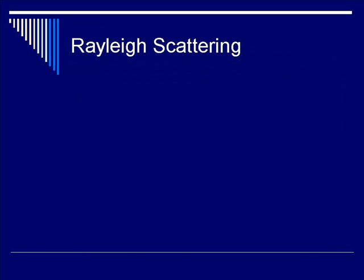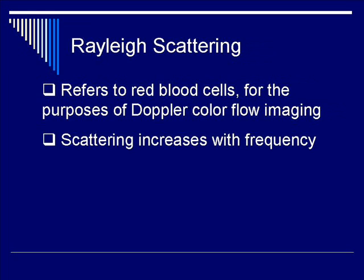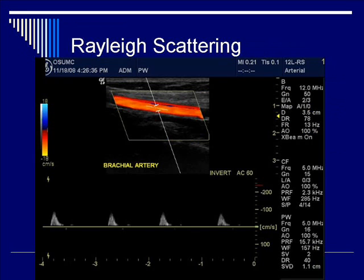Let's talk about Rayleigh scattering. Here is an example of acoustic scattering, specifically referring to the use of red blood cells and the scattering of ultrasound signals within the context of a Doppler color imaging study. Similar to diffuse scattering, we depend on the fact that the dimensions of red blood cells are much smaller than the ultrasound wavelength. Unlike depth attenuation and specular reflection, Rayleigh scattering increases with frequency — the dependence is actually frequency to the fourth power. This example shows a color Doppler and power Doppler measurement of an upper extremity vein, demonstrating the utility of red blood cells and Rayleigh scattering for a very useful clinical purpose.